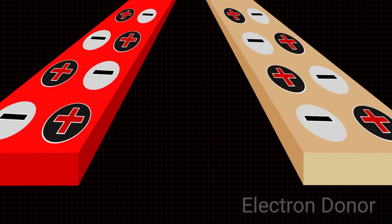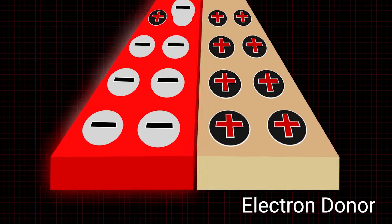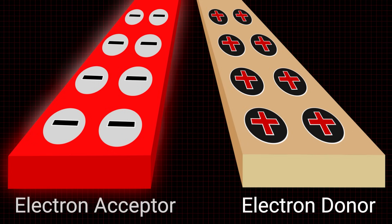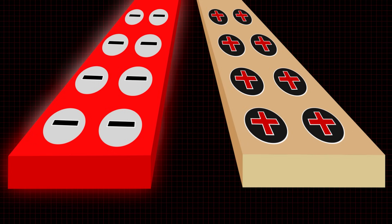One material will be an electron donor, which will result in a positive charge, and the other material will be an electron acceptor, which will result in a negative charge.